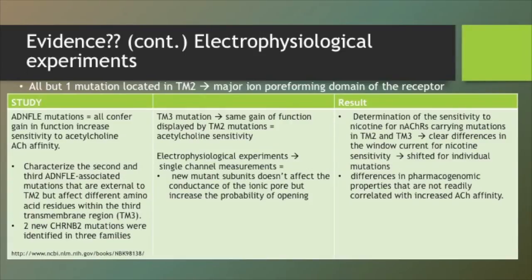In this work there is characterization of the second and third ADNFLE-associated mutations that are external to TM2 but affect different amino acid residues within the third transmembrane region, TM3. The two CHRNB2 mutations were identified in three families of Scottish, Turkish, and English origin. These TM3 mutations displayed the same gain-of-function pathomechanism as observed for the TM2 mutations with enhanced acetylcholine sensitivity, despite their unusual localization within the gene. Electrophysiological single-channel measurements revealed that incorporation of these new mutant subunits does not affect the conductance of the ionic pore but increases the probability of opening.